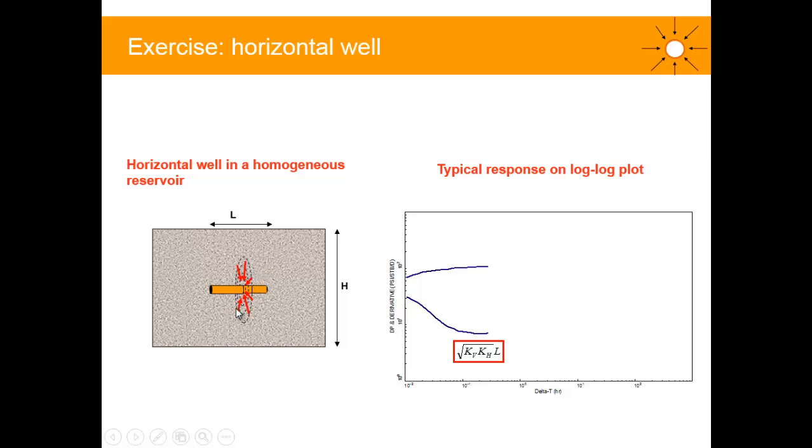So near the wellbore, small delta t, now we should expect a vertical radial flow regime. That means a stabilization on the derivative.